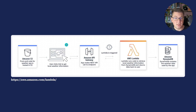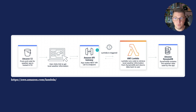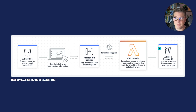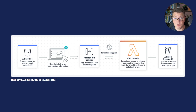Another common use case for AWS Lambdas is using them as request and response services. You would have your application send a request — it's going to be routed to an Amazon API Gateway, which is going to trigger the respective AWS Lambda function. The function itself can reach out to a database, for example Amazon DynamoDB, and then it's going to return a response through the gateway to the application that requested this information.